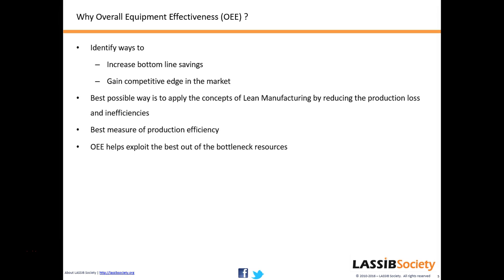OEE actually helps in improving production efficiency — it helps you exploit the best out of your bottleneck resource. Bottleneck resource would be a new term. So what is a bottleneck? In any process, it is the equipment or machine that produces the least parts per hour as compared to the whole process line.